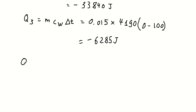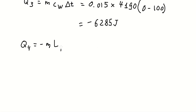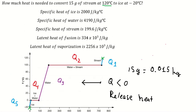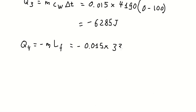The next one, we have cube number 4. We do the same, and we have this number in here. And we have negative 5,010.